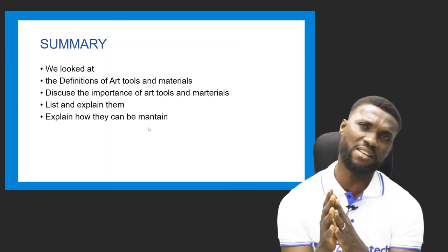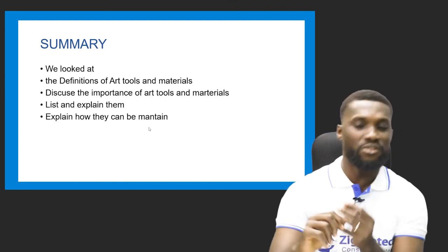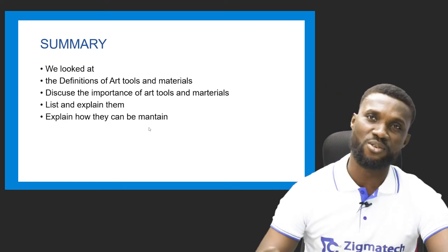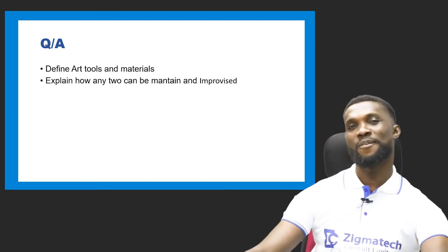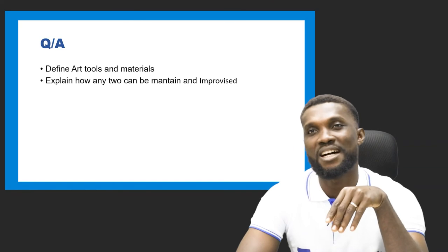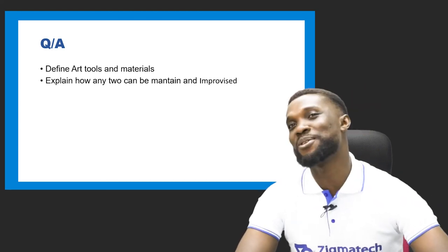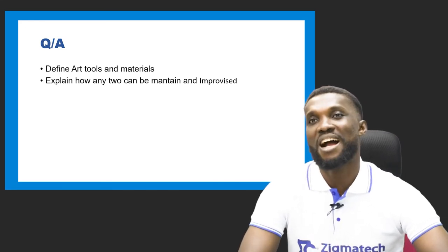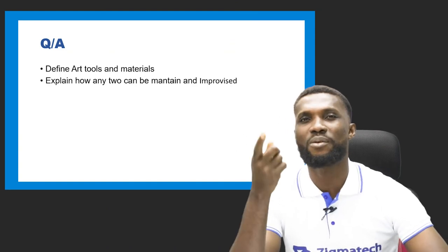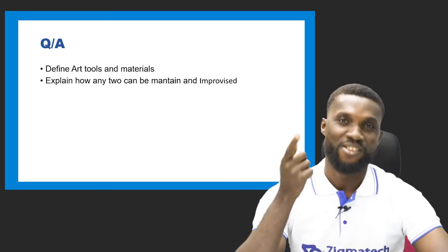I want to believe you had fun in this class. If there is any material or tool you don't fully understand, ask your teachers in school. Now it's time to test ourselves with Q&A. Define art tools and art materials — those are questions for you. Also: can you explain how any two materials can be improvised in their absence and how you can maintain them? For example, how can the mallet be improvised and how can you take care of it?